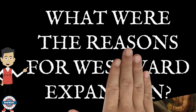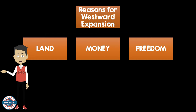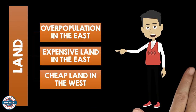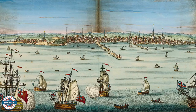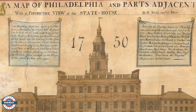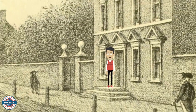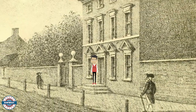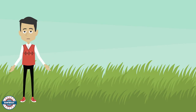What were the reasons for westward expansion? Well, specifically there are three reasons. We're going to discuss land, money, and freedom. Prospects of land were a major motivation for pioneers heading out west. In major cities like Philadelphia, Boston, and New York, there was becoming an overpopulation within the cities. Land was expensive in the east, but it was much cheaper in the west.